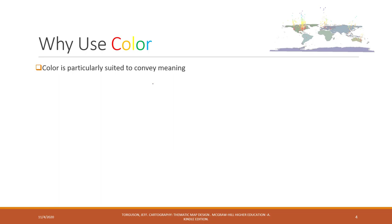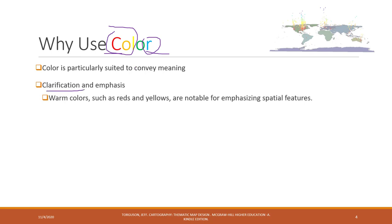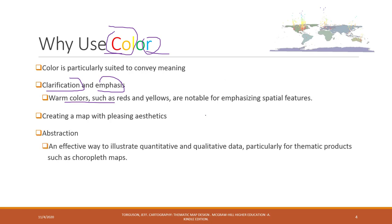There are several reasons why we want to use colors. The first is that color has special meanings and can convey emotions. For example, red is a warm color and blue is a cold color. Colors are also great for clarity, emphasis, and highlighting spatial features. They make maps beautiful, and they help illustrate both quantitative and qualitative data.